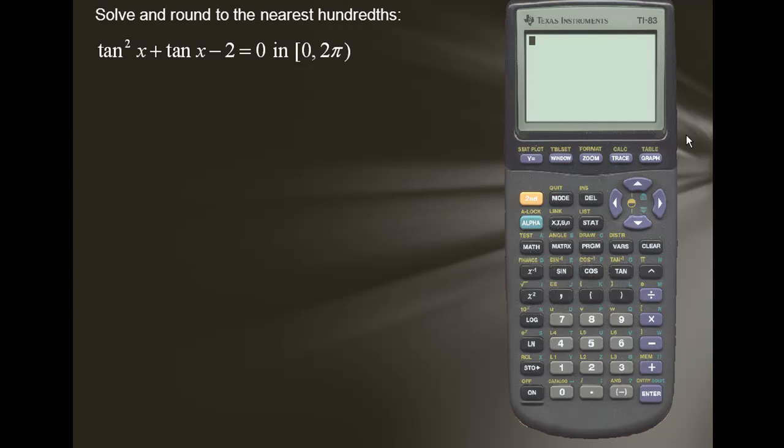Let's solve and round to the nearest hundredths the function tan²x + tan(x) - 2 = 0 in the interval from 0 to 2π.